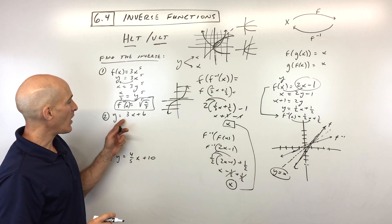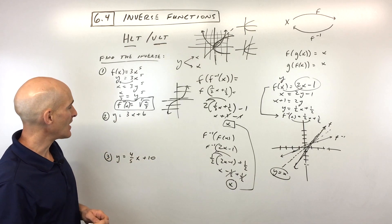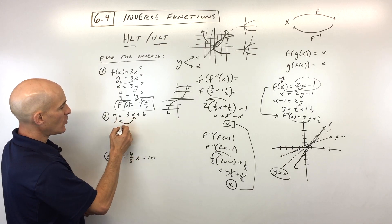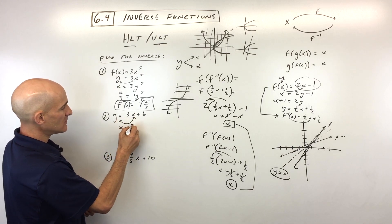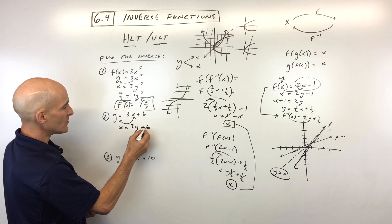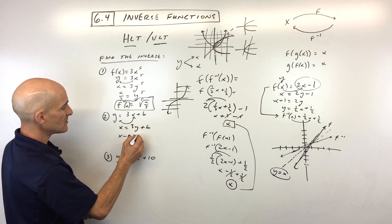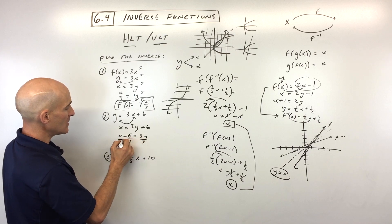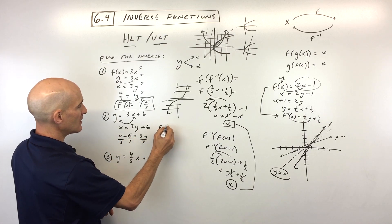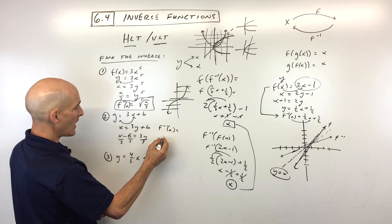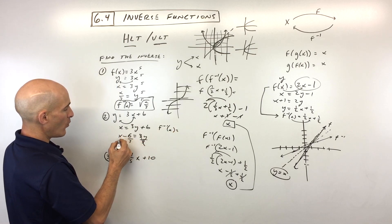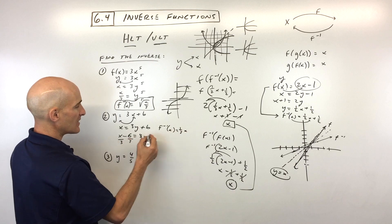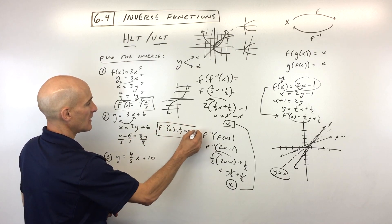Number two: y equals 3x plus 6. How would you find the inverse for this one? We switch the x and the y. Then solve for the new y: subtract 6 from both sides, then divide everything by 3. So the inverse function is y equals one-third x minus 2.